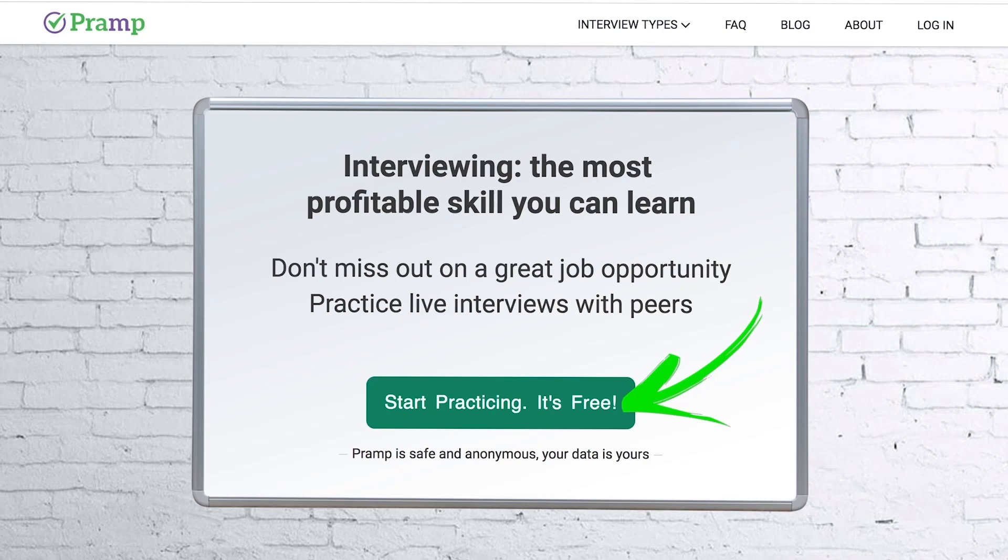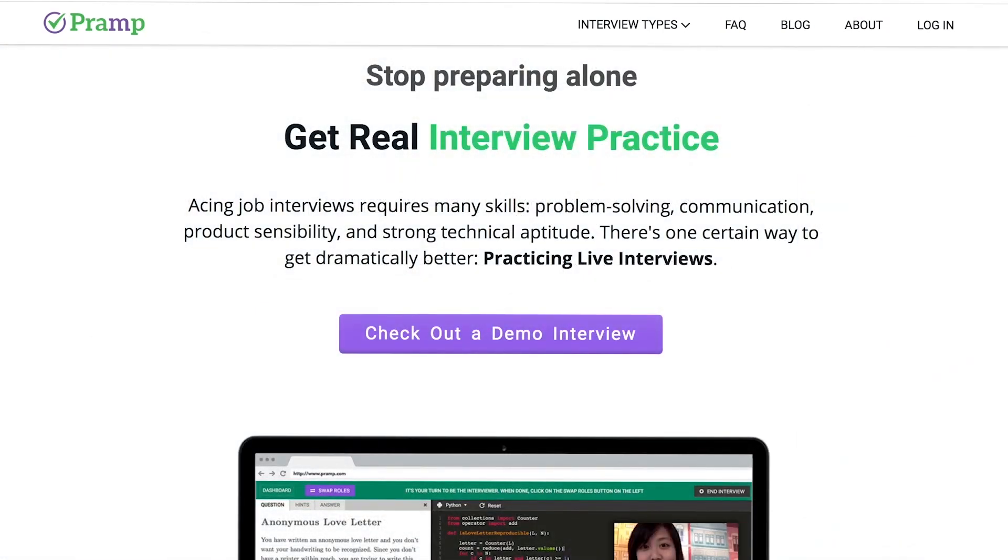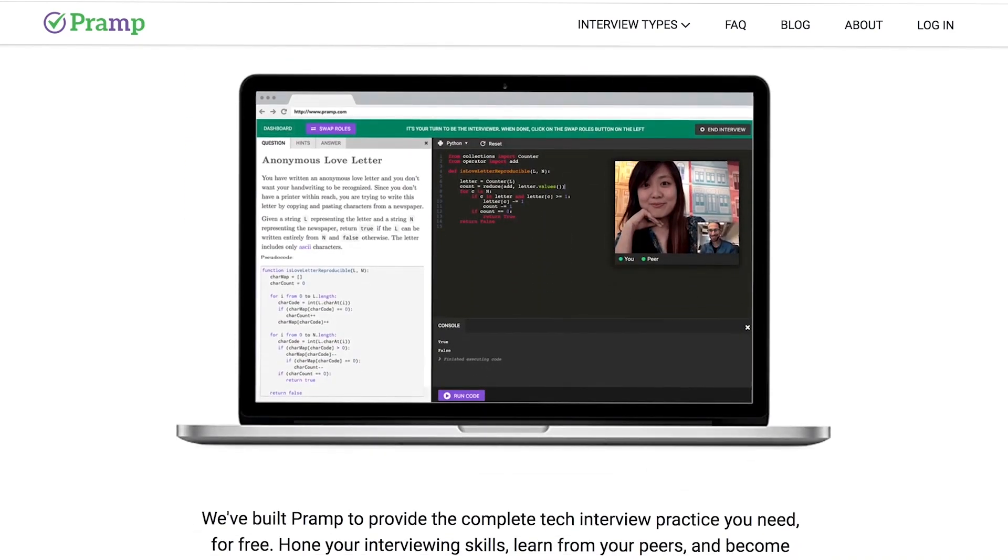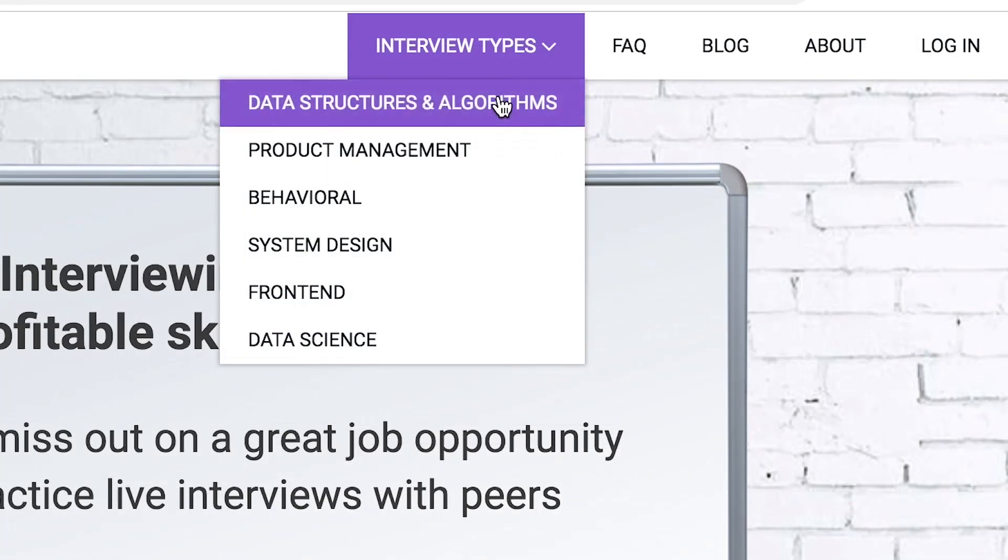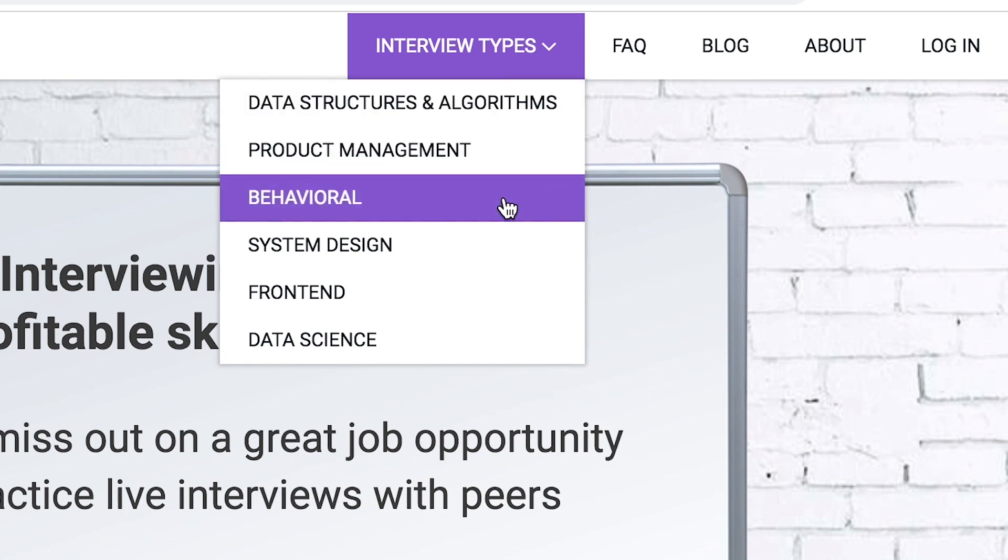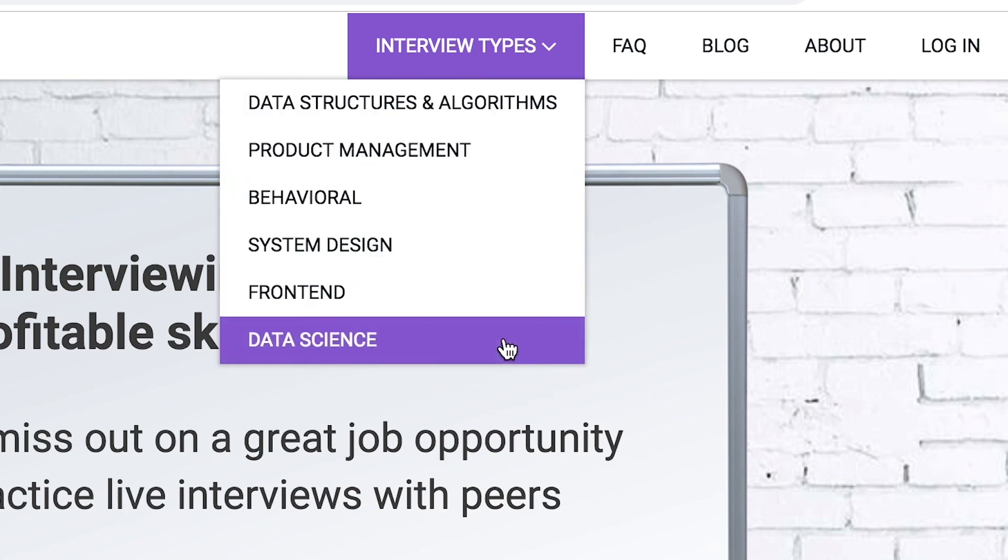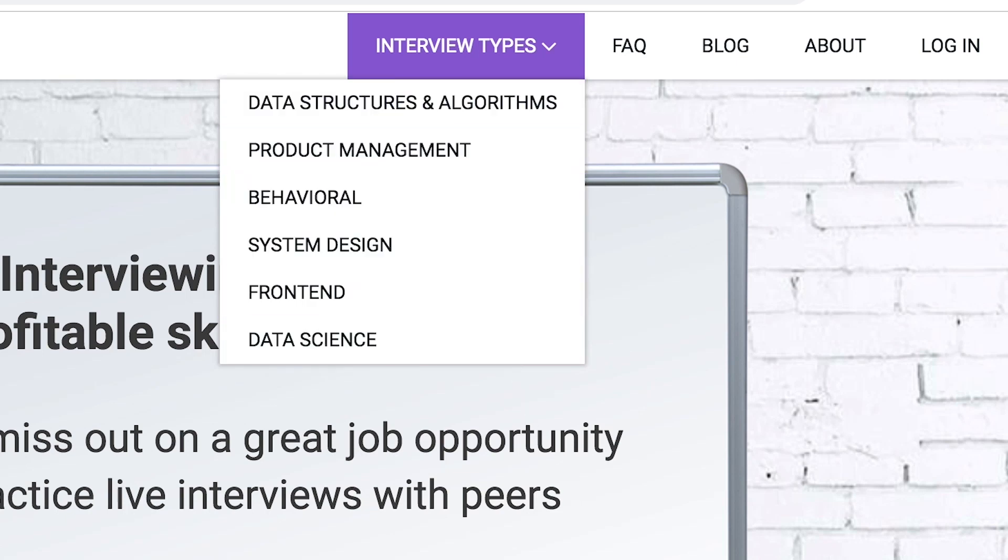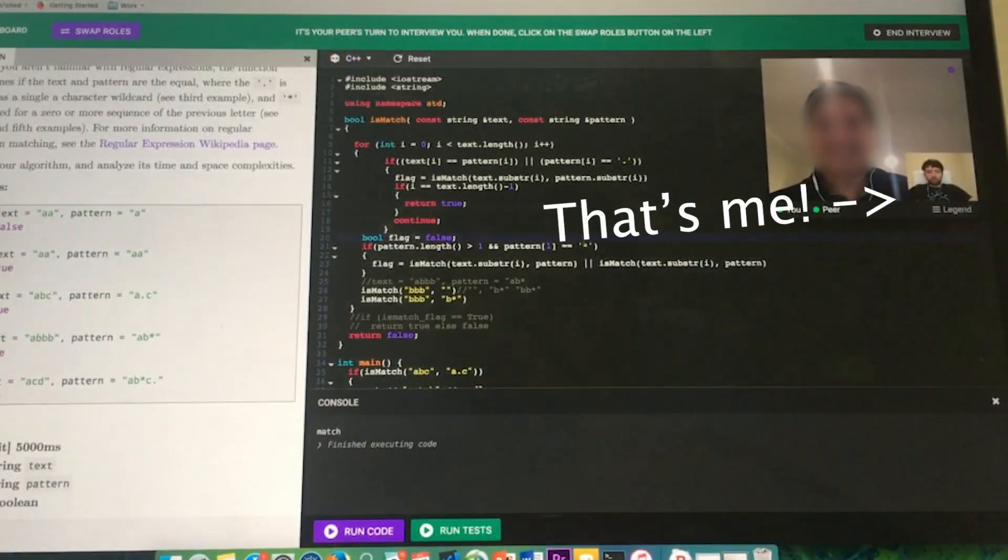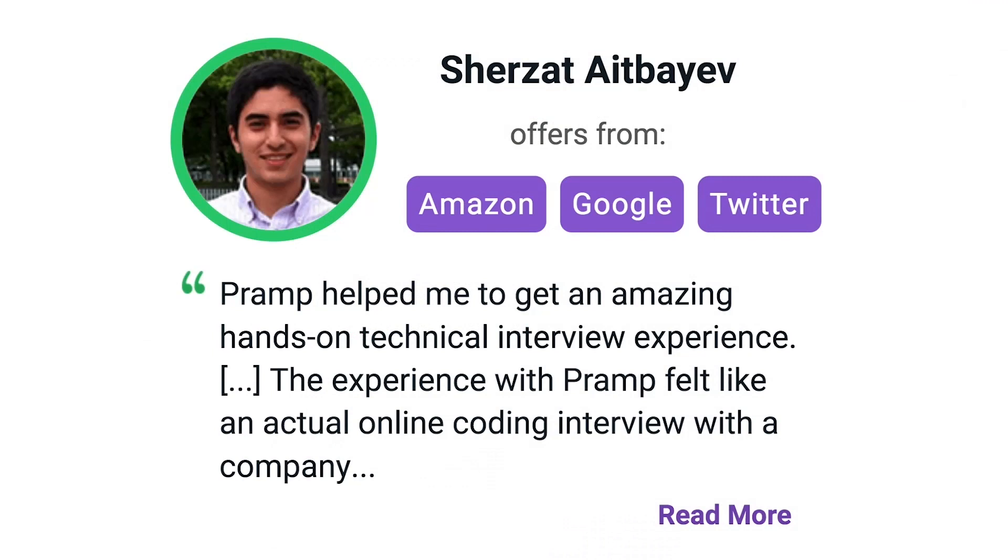Pramp is a free mock interview platform where you can develop your technical interviewing skills. Practice coding with live execution of all major programming languages to solve real interview questions. Interview types include data structures and algorithms, product management, behavioral interviews, system design, front-end, and data science. I've personally used this service to successfully crash course for a software engineering interview. Lots of people are having success getting positions at companies like Amazon, Google, Twitter, and more. Check it out. I'll leave a link for you guys in the description.